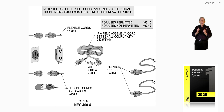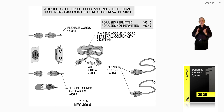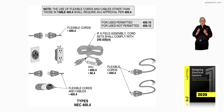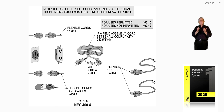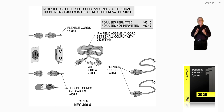So keep that in mind: 400.4 and 90.4 for field assembly cords and those cords and cables that are not of a type identified in NEC 400.4.